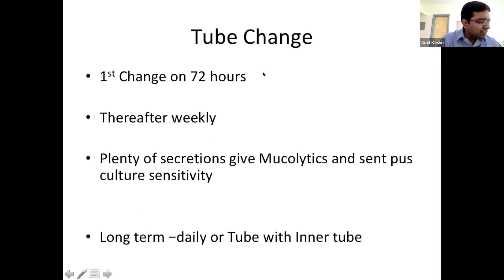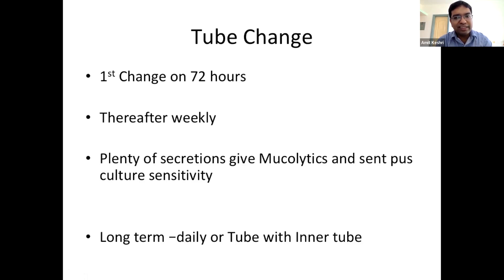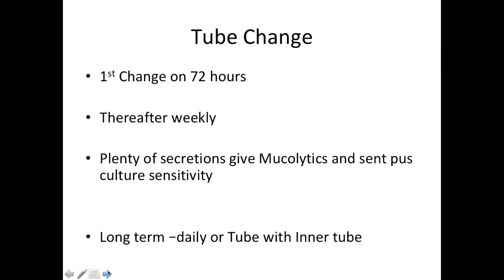The first tube change is at 72 hours; thereafter weekly. If there are excess secretions, use mucolytics such as ambroxol or N-acetylcysteine; if pus is present, send for culture and sensitivity. Initially, some secretion is expected as a foreign body reaction. For long-term patients, keep two tubes — when one tube is removed, clean it under tap water and store in diluted Savlon; alternate tubes daily. Inner and outer tubes can similarly be cleaned under tap water.